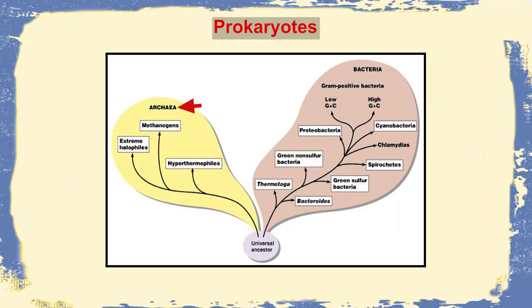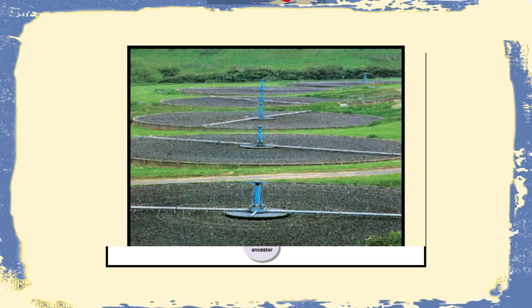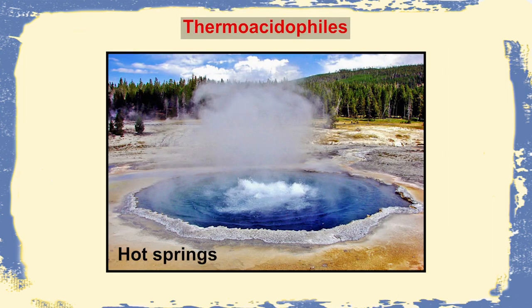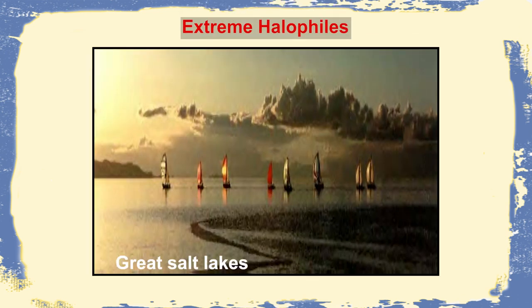Archaebacteria can be divided into three major categories: methanogens, thermoacidophiles, and extreme halophiles. Methanogens grow in the absence of oxygen, using H₂ and carbon dioxide to produce methane. Thermoacidophiles grow in extreme high-temperature environments and can also grow under very low pH conditions of pH 2. Extreme halophiles grow in environments of very high salt concentration, such as the Great Salt Lake.